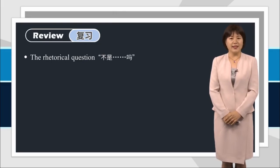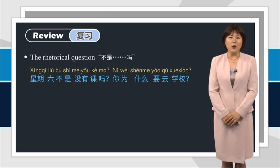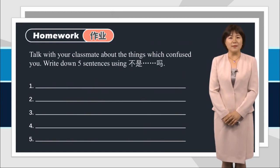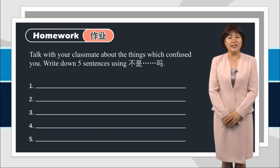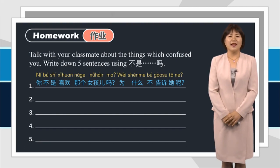Let's have a brief summary. In this class we have learned the rhetorical question: 星期六不是没有课吗？你为什么要去学校？After class, talk with your classmates about things that confused you, and write down five sentences using 不是...吗？For example: 你不是喜欢那个女孩吗？为什么不告诉她呢？That's all for today. See you next time. 再见！